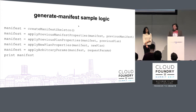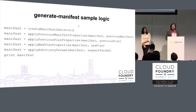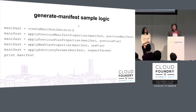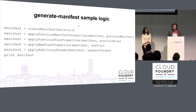Here's some pseudocode for what manifest generation logic might look like. First, you create the skeleton. Then you interpolate any previous manifest properties. Previous plan properties come after that. Finally, you add the new plan properties and any arbitrary parameters before printing the manifest in plain text to standard out. If you exit zero, the on-demand broker knows it's been a successful manifest generation.